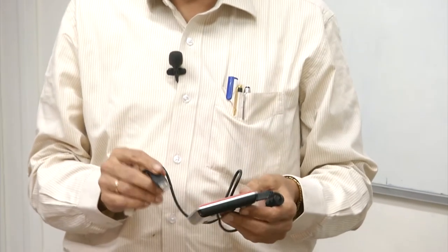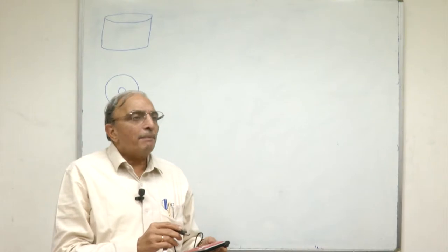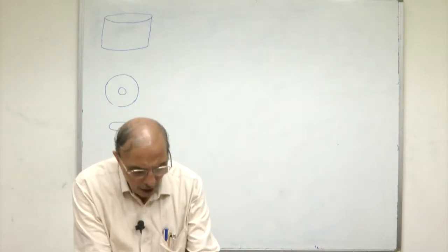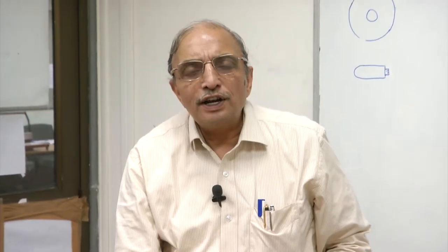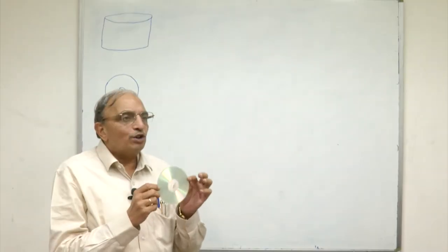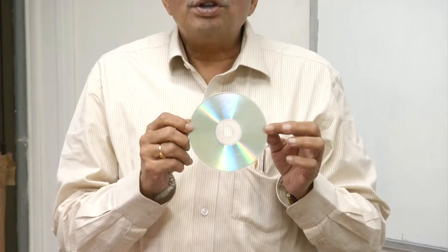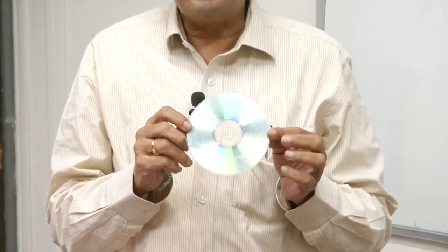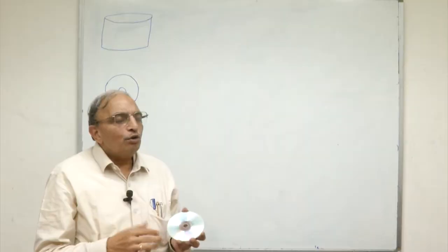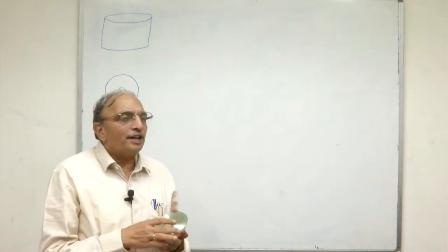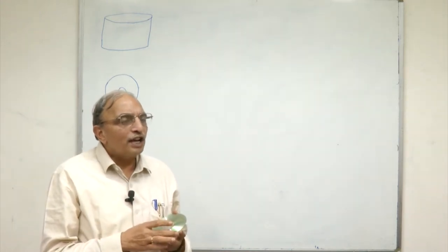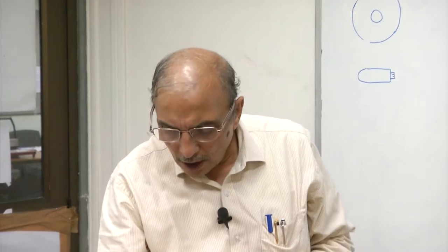These store data using magnetic recording. We also have other forms of data storing. For example, you would be familiar with a compact disk which looks like this. This CD can also store data in many files. You also have a version with higher capacity called DVD which can store larger amounts of data.